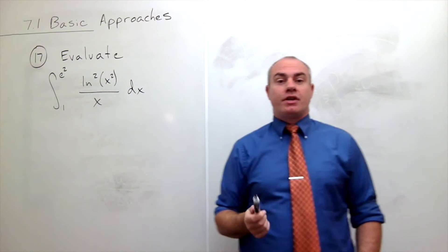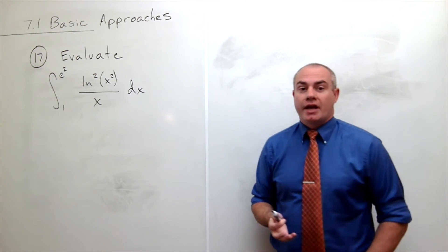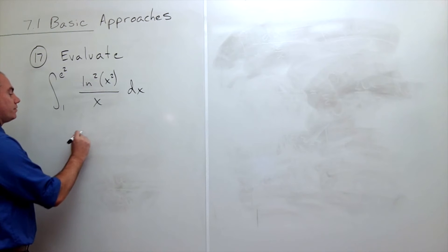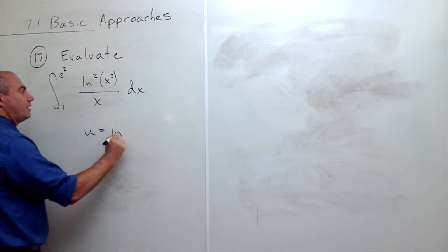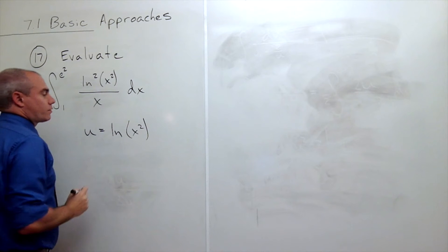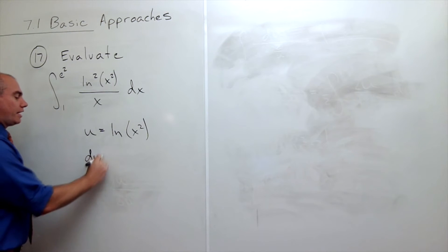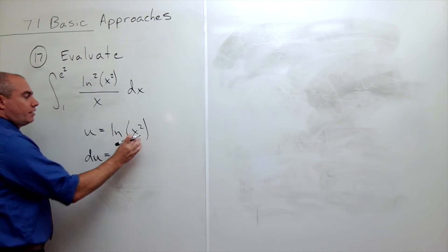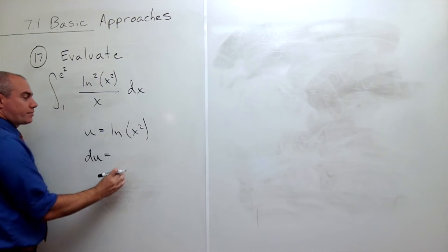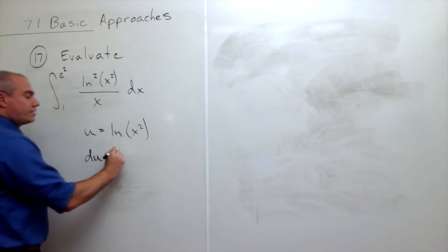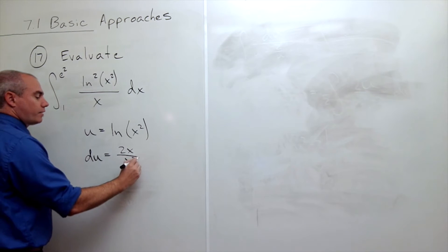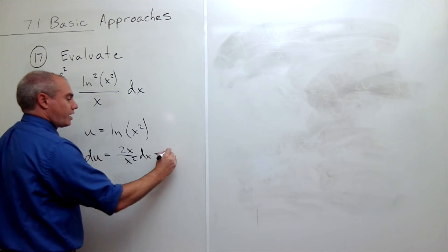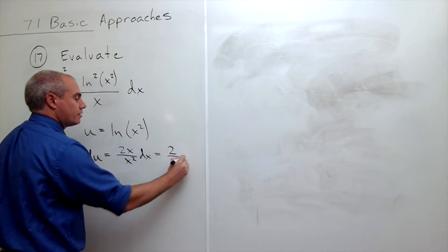So the first thing that I want to do here is I want to start with a u substitution. Let's substitute u equals ln of x squared. If I do, then I get that du is equal to the derivative of x squared over x squared. The derivative of x squared is 2x over x squared dx. But I could simplify that and just write it as 2 over x dx.